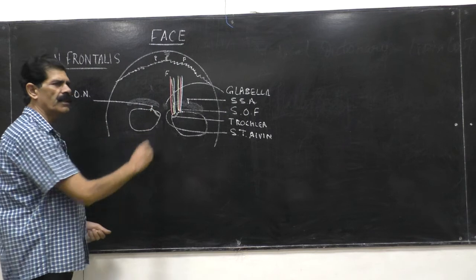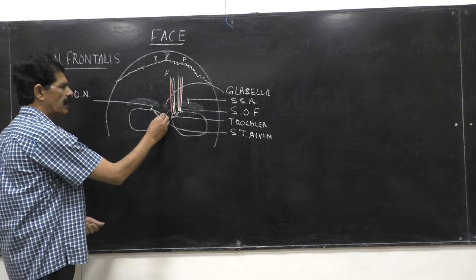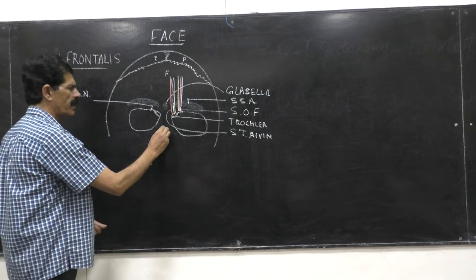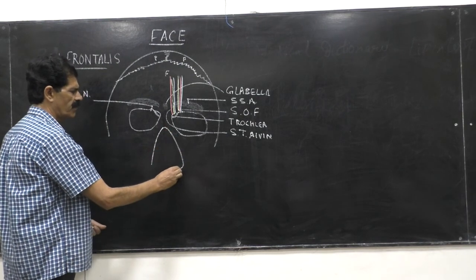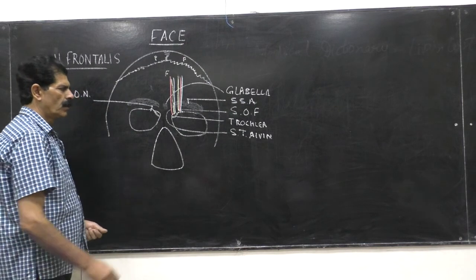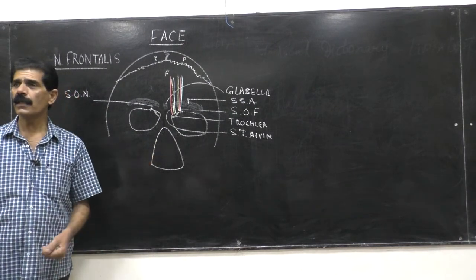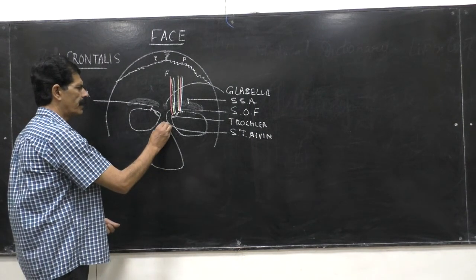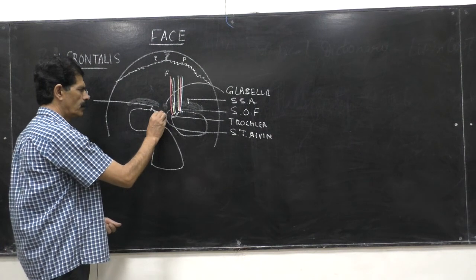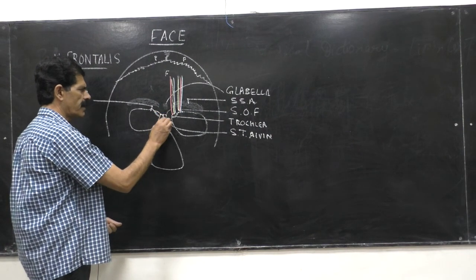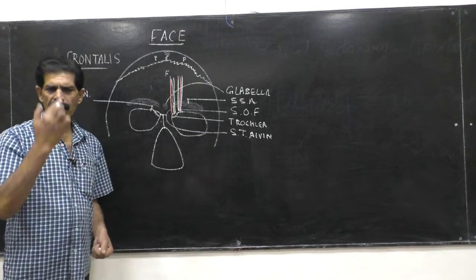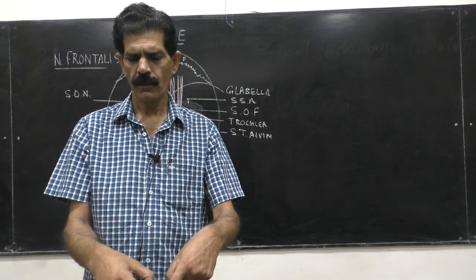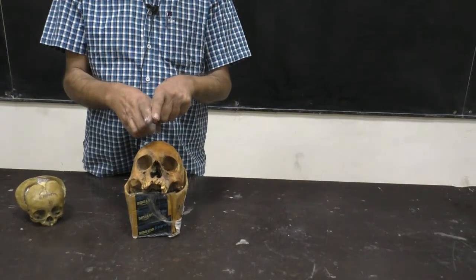Just below the glabella and below the orbit lies the nasal cavity. The bony part of the nasal cavity is seen in the norma frontalis. Above the nasal cavity, two nasal bones are present — right and left — forming the bridge of the nose. They are not flat; they slope.